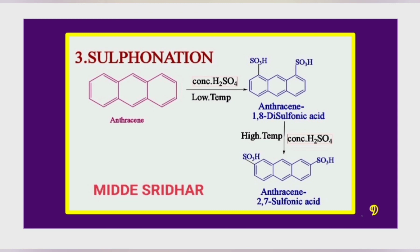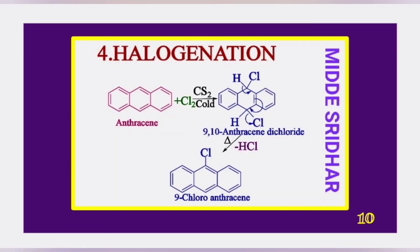At high temperature with concentrated sulfuric acid, anthracene-2,7-disulfonic acid is obtained. When anthracene is reacted with chlorine gas in the presence of carbon disulfide, anthracene-9,10-dichloride is obtained. This on heating loses HCl and gives 9-chloroanthracene.